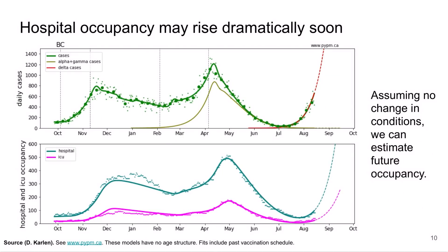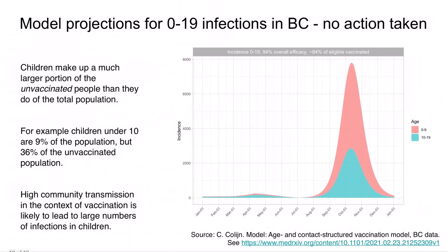Under the assumption of no change in conditions, we can estimate the future. What we see is the projection of exponential growth due to delta, and correspondingly the increase in hospital and ICU occupancy.